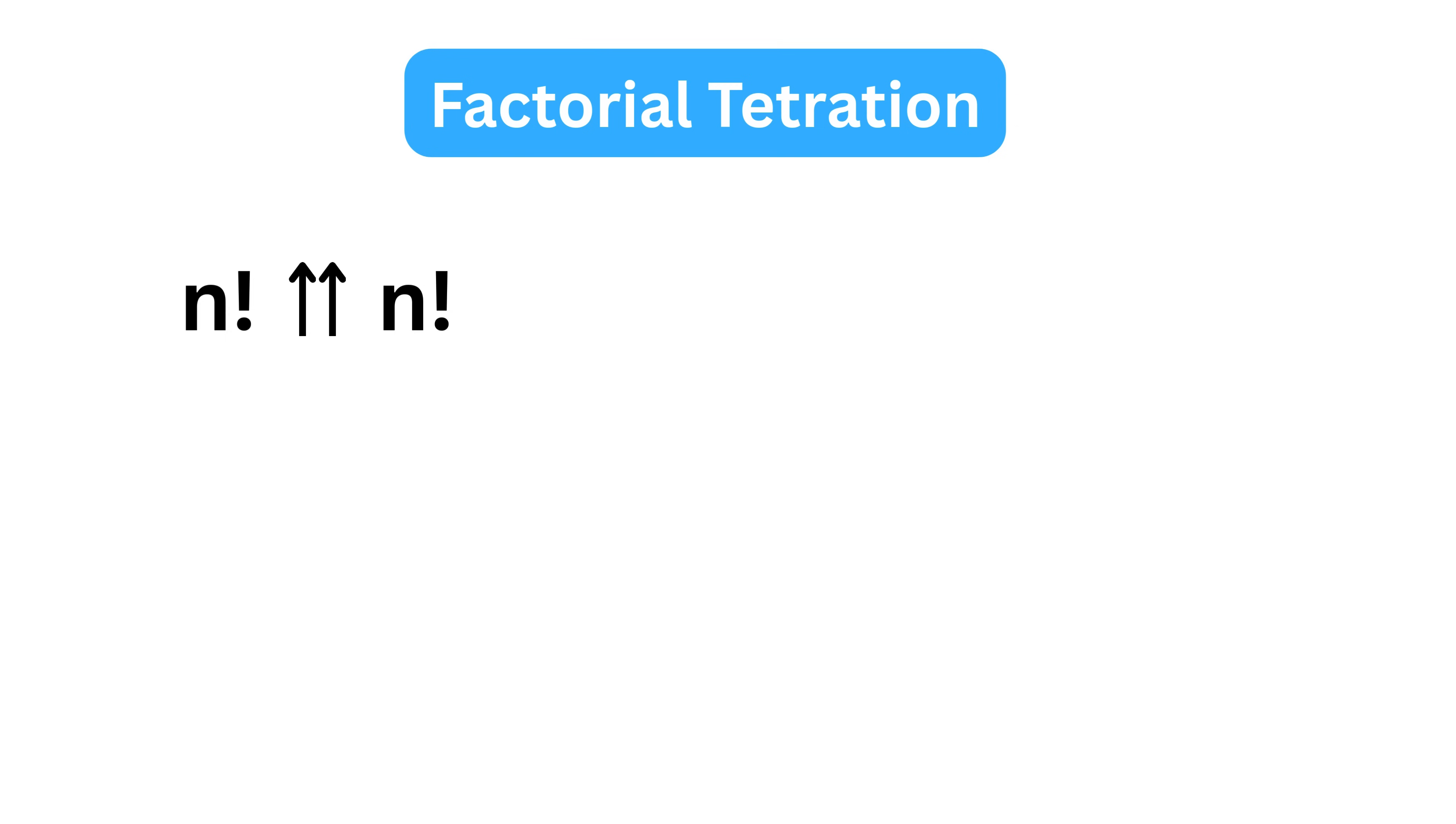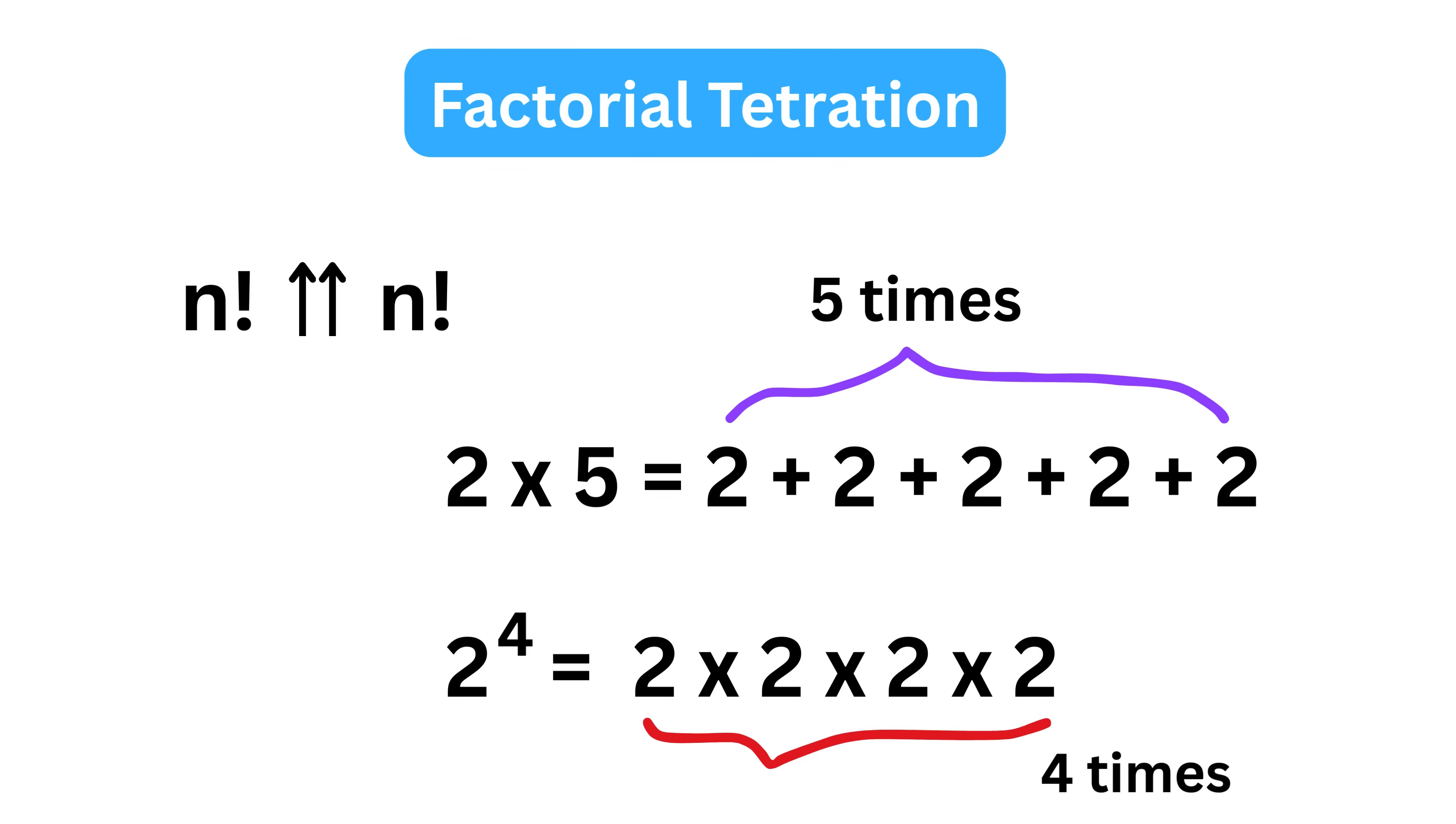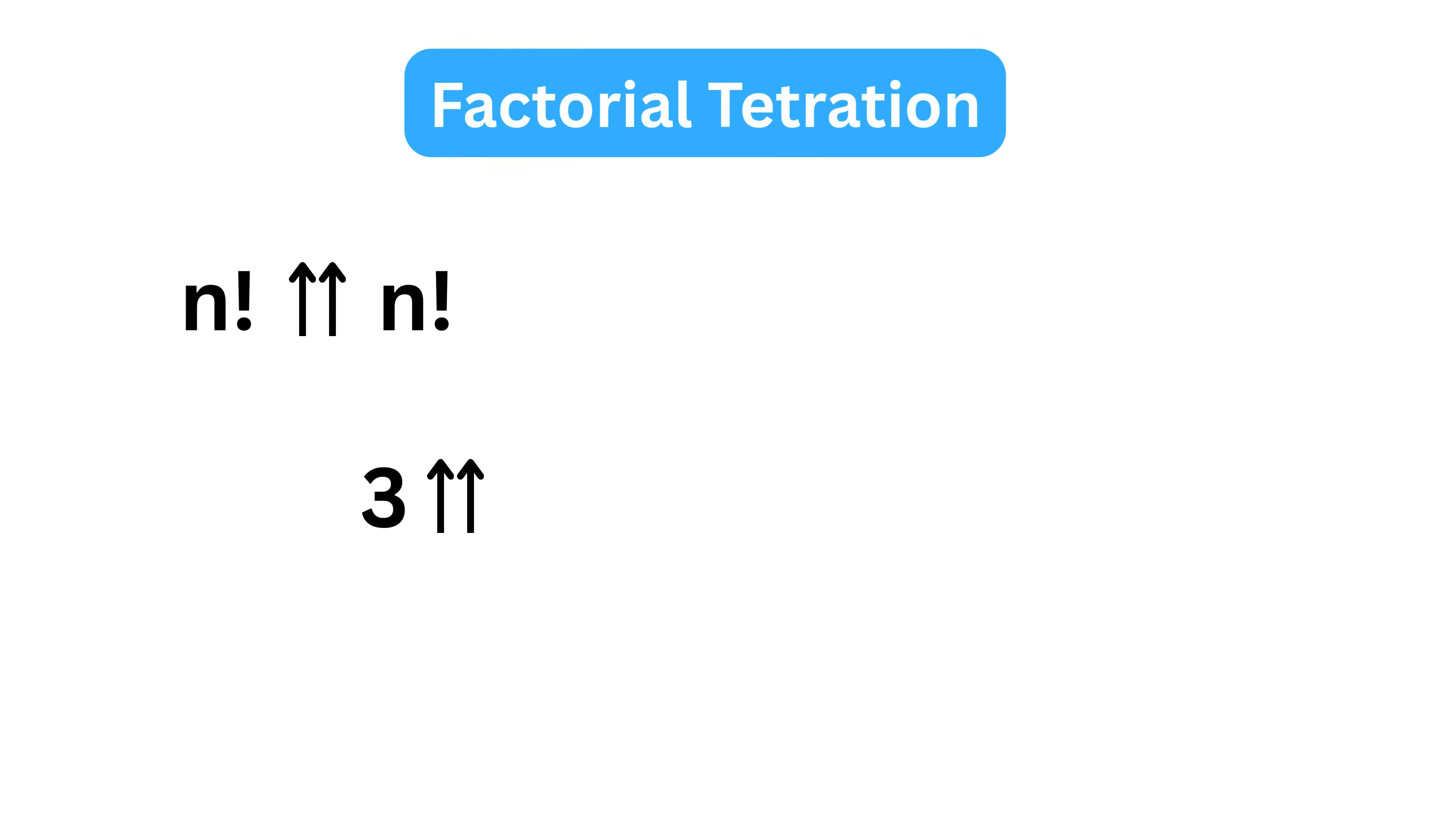Tetration means repeated exponentiation, just like multiplication is repeated addition and exponentiation is repeated multiplication.